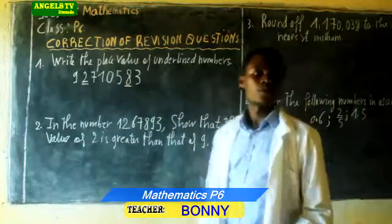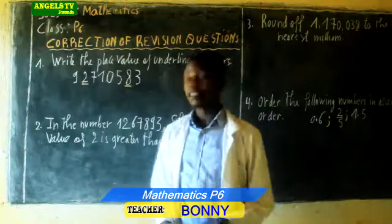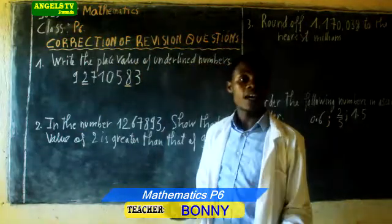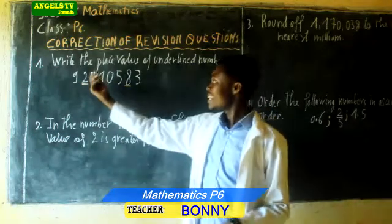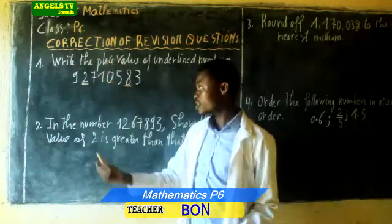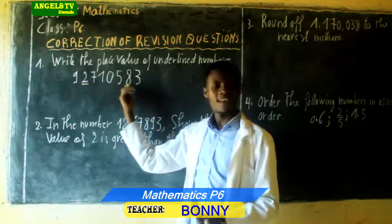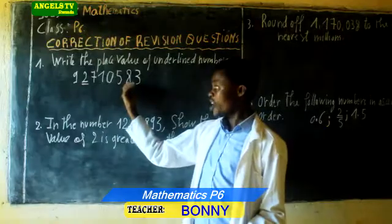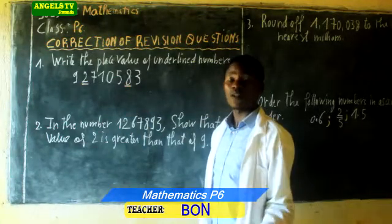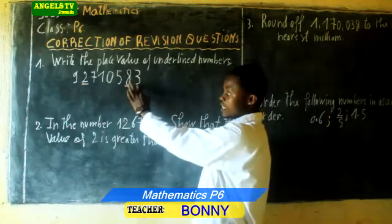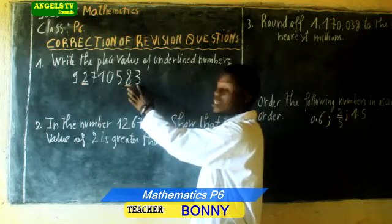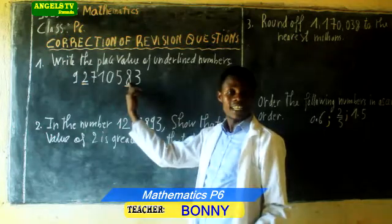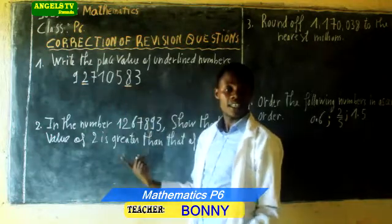Let us start from number 1. Question number 1 is saying: write the place value of the underlined numbers. Here we are going to write only the place value of underlined numbers. Here we are having the 2 and here we are having the 8. So let us write the place value of this 8. When you are writing the place value of your number, you know that this number is already 1s, then the next number is already 10s. It means that this 8, the place value of this 8 is 10s.